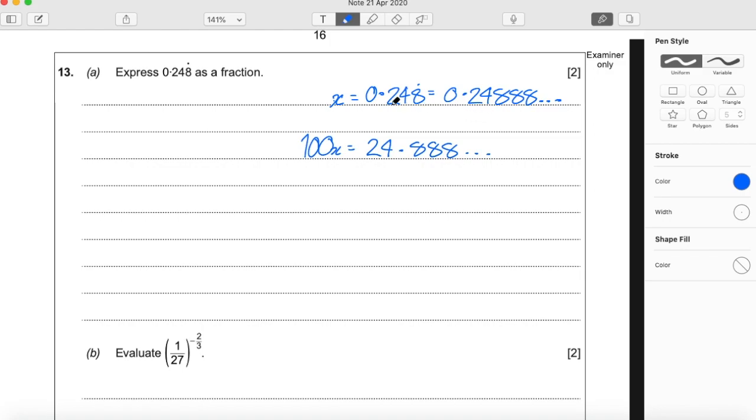Now what we want to do is take away x from both sides. So take away x equals minus... I'll just make this a little bit clearer. So we're taking away x, so that's 0.24888 forever.